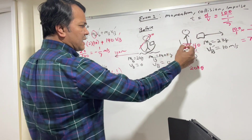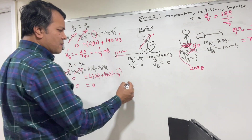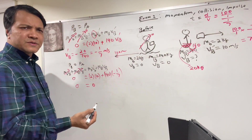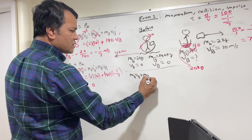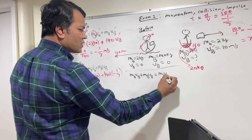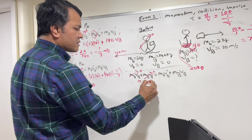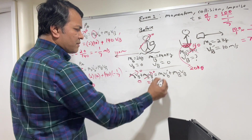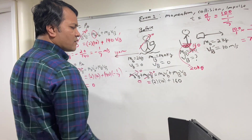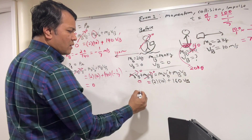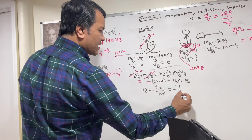Now there is rain and 20 kg of water accumulated on the boat. For the second part: momentum before equals momentum after. Before is 0. After: book is still 2 kg at 10 m/s, mass of boat is now 160 kg (140 + 20). So V_boat = −20/160 = negative 1/8 meter per second.